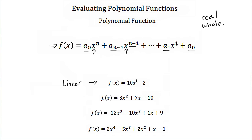Here we have f(x) = 3x² + 7x − 10. We have x to the first power here, but there's a higher power of 2. Since this polynomial's highest power is 2, we call this a quadratic polynomial, or a quadratic function.